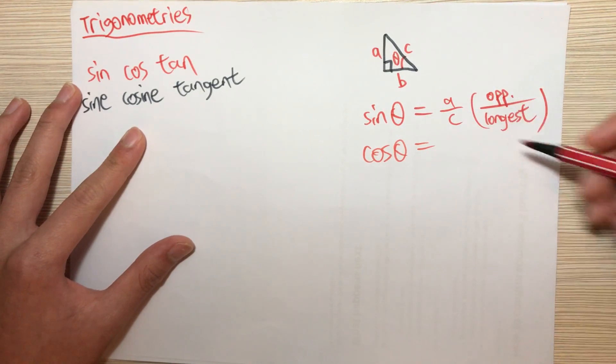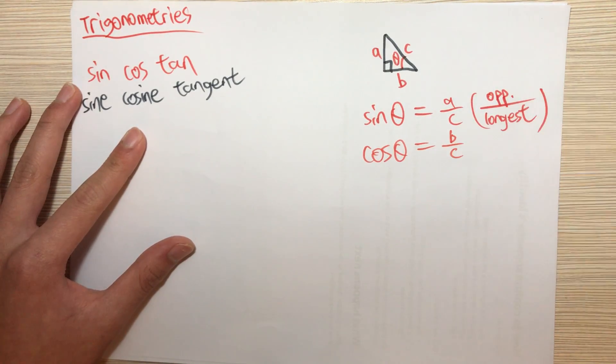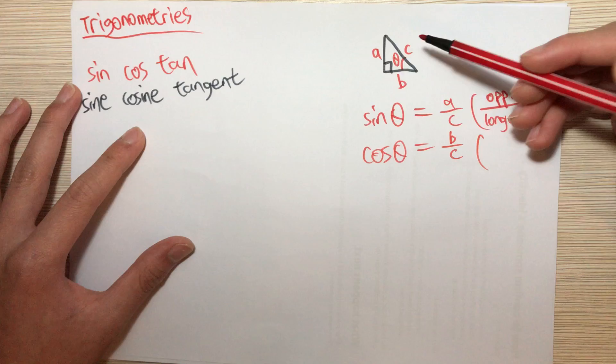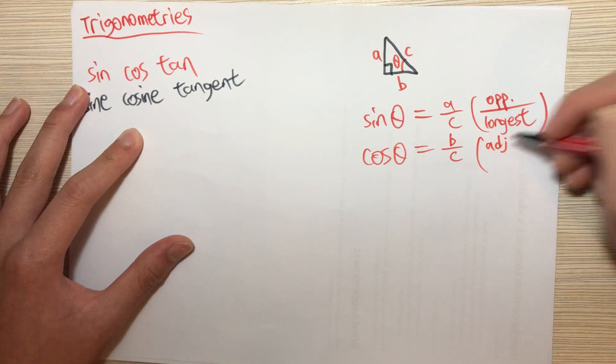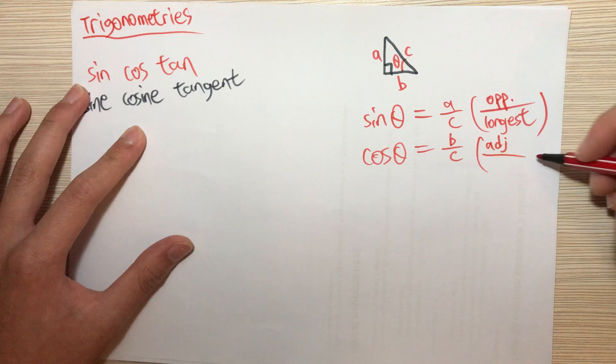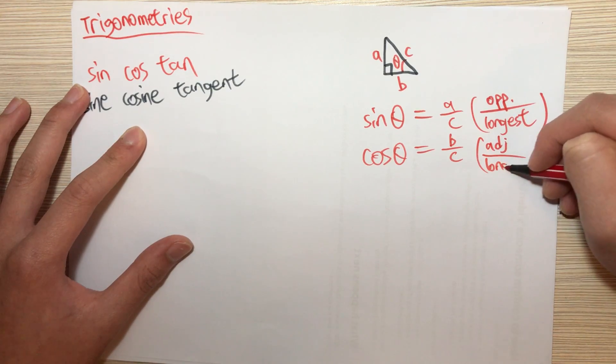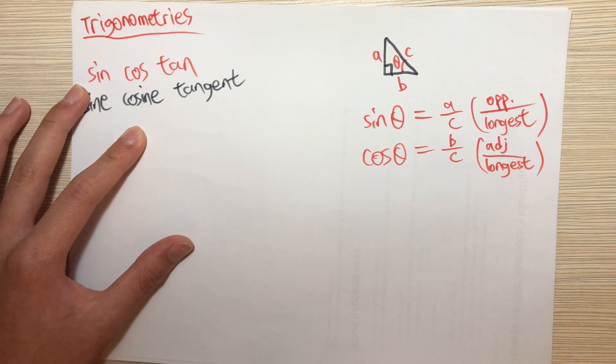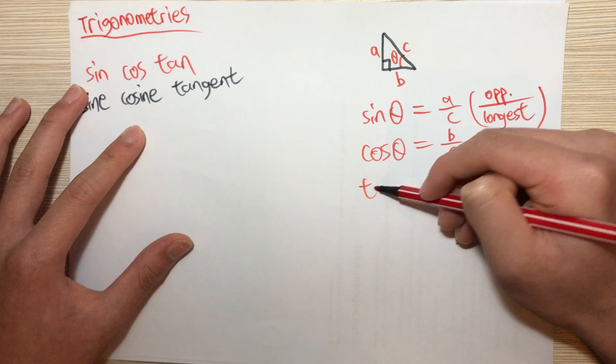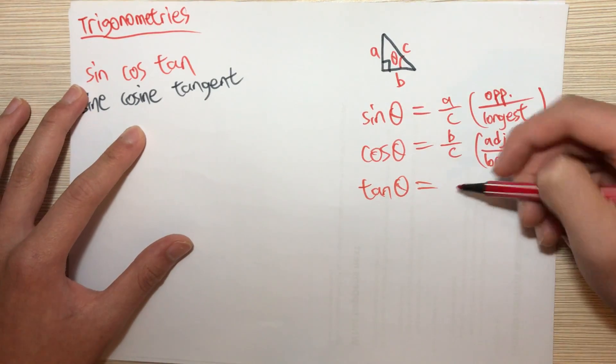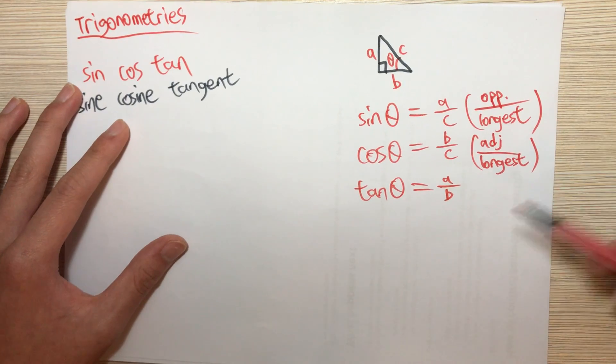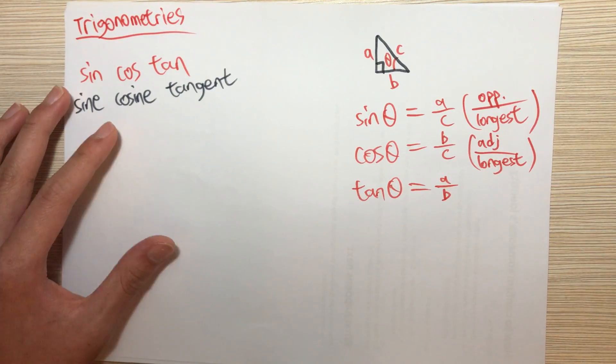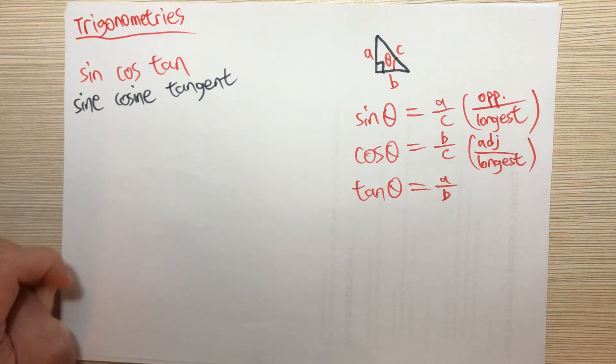And then cosine theta is similar. It is B over C. Just remember that it's the adjacent side of the angle over the longest side. And lastly, tangent theta equals A over B.